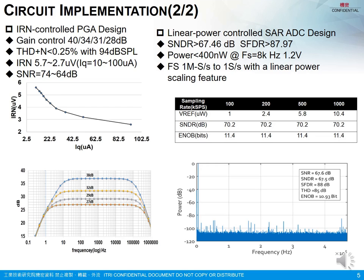The quiescent current can be scaled from 100μA to 10μA, and their corresponding input-referred noise is 2.7μV and 5.7μV. The SAR ADC operates with an 8kHz sampling rate and consumes only 400nW.